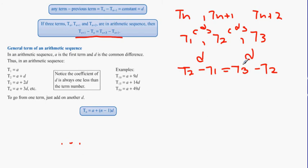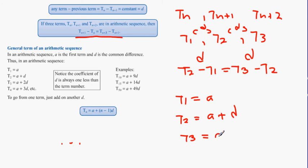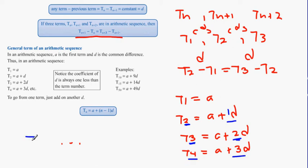In an arithmetic series, T1 is always A, T2 is A plus D, T3 is A plus 2D, and T4 is A plus 3D. Notice the pattern: when the term number is 3, the multiplier on D is 2; when it's 2, the multiplier is 1; when it's 4, the multiplier is 3. This means Tn equals A plus (n minus 1) times D.